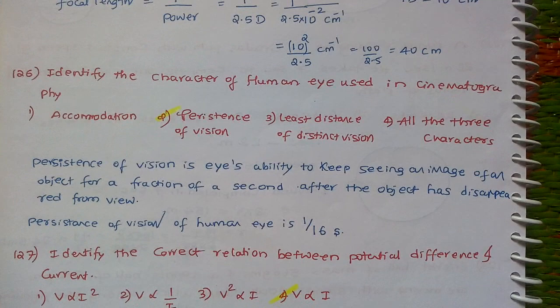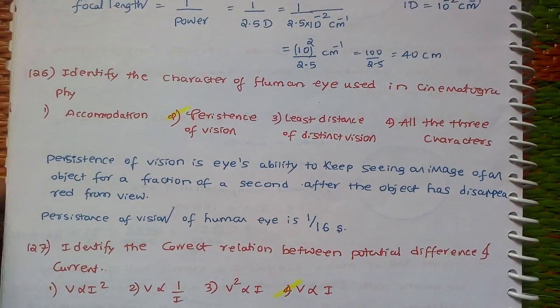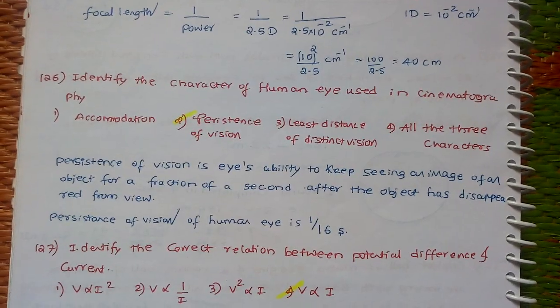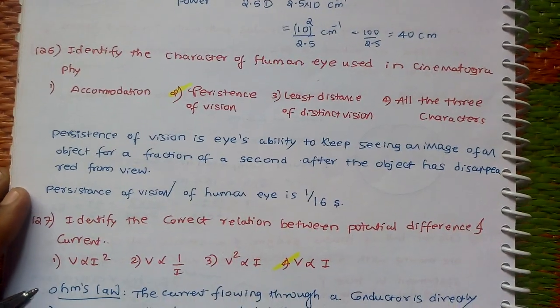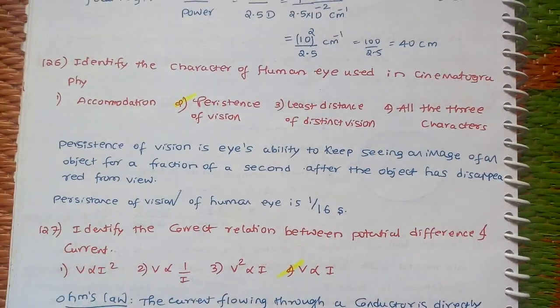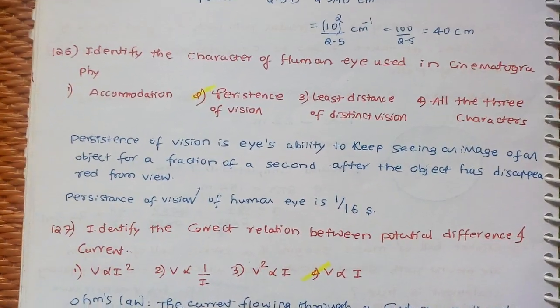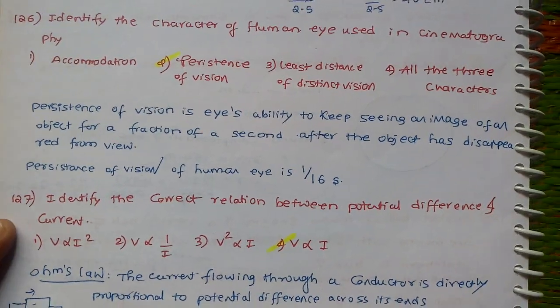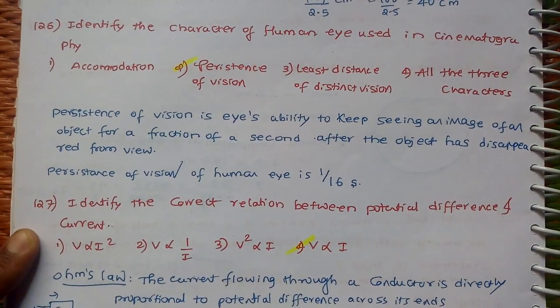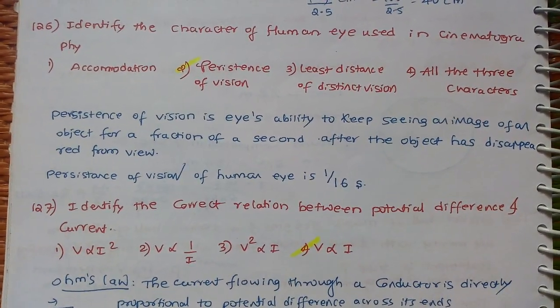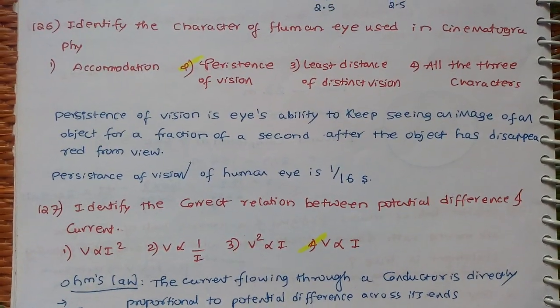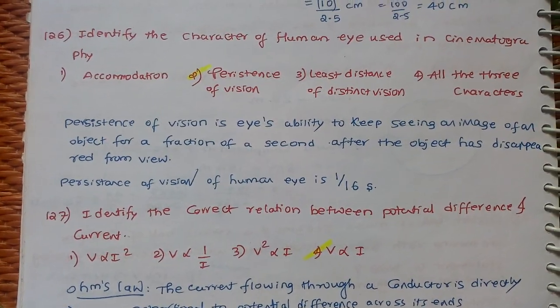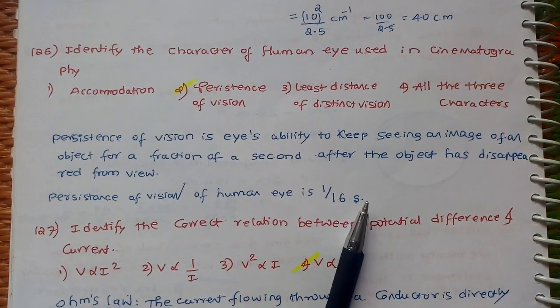Next, identify the character of human eye used in cinematography. Options include accommodation, persistence of vision, least deviation, least distance of distinct vision. The answer is persistence of vision. Persistence of vision is the eye's ability to keep seeing an image of an object for a fraction of a second after the object has disappeared from view.